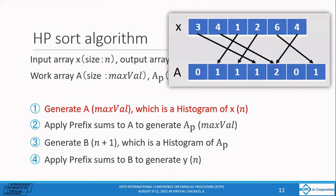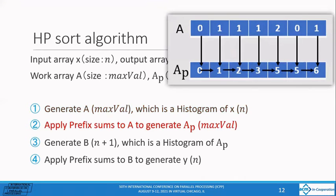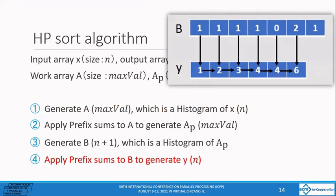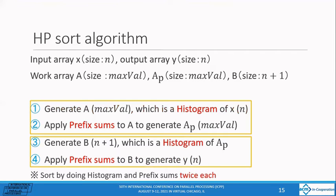As an overview of the algorithm. First, create a histogram a, which is the frequency distribution table of the input data. It then generates an a_p by applying the first prefix sums to histogram a. To produce an array b, which is a histogram of the a_p. Finally, the result is output to y by applying the prefix sums to histogram b a second time. The HP-sort algorithm completes sorting by performing the process of generating a histogram and applying a prefix sums to each twice in this way.